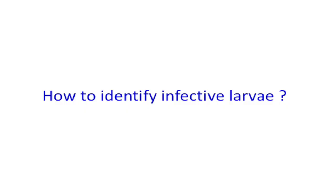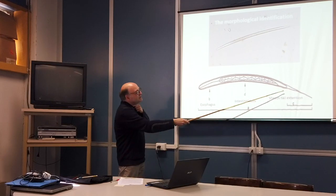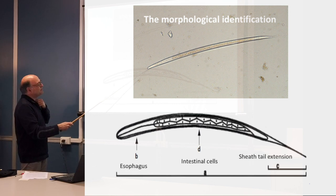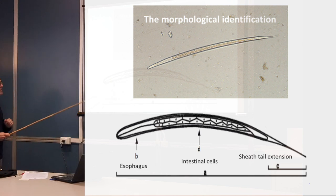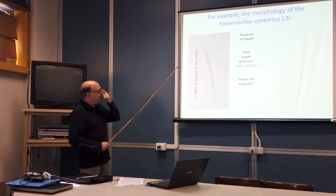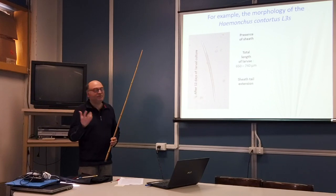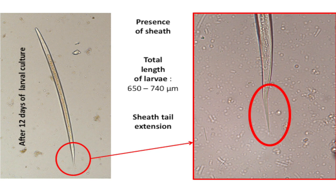How to identify infective larvae — the second step. Everybody here has done morphological identification, I presume. You know that you look at the presence or absence of the sheath, the number of intestinal cells, the shape of these intestinal cells, and the length of the tail in the anterior part. You have different parameters which are really important to identify the larvae. For example, you have what we call the sheath tail extension.